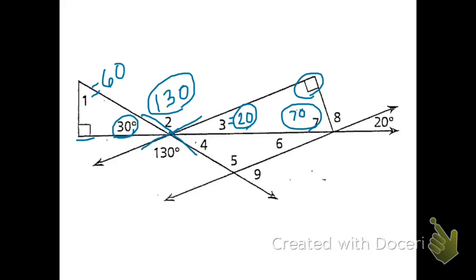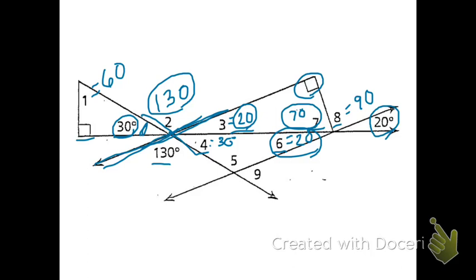Angle 7 has to be 70 degrees because 20 plus 90 is 110, and 180 minus 110 is 70. For angle 4: 130 and 20 and angle 4 form a straight line, so 180 minus 130 minus 20 gives 30 — and you could also see that as a vertical angle with the 30 already shown. Angle 6 is a vertical angle with 20, so angle 6 is 20. Then angle 6 plus angle 7 plus angle 8 adds up to 180, so 180 minus 70 minus 20 gives angle 8 as 90. For angle 5: 180 minus 30 minus 20 gives angle 5 as 130.